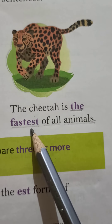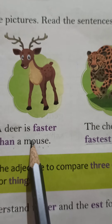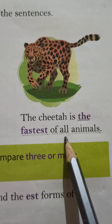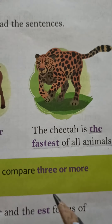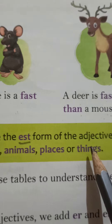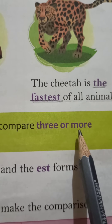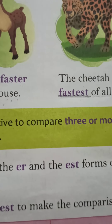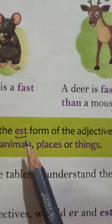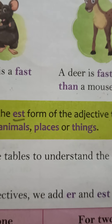The cheetah is the fastest of all animals. हमने cheetah को deer और mouse के साथ compare किया, और all animals में cheetah fastest है. We use the EST form of the adjective when we compare three or more people, animals, places, or things — हम EST form तब लगाते हैं जब हम तीन या तीन से भी ज़्यादा चीजों, animals, या जगहों को compare करते हैं.